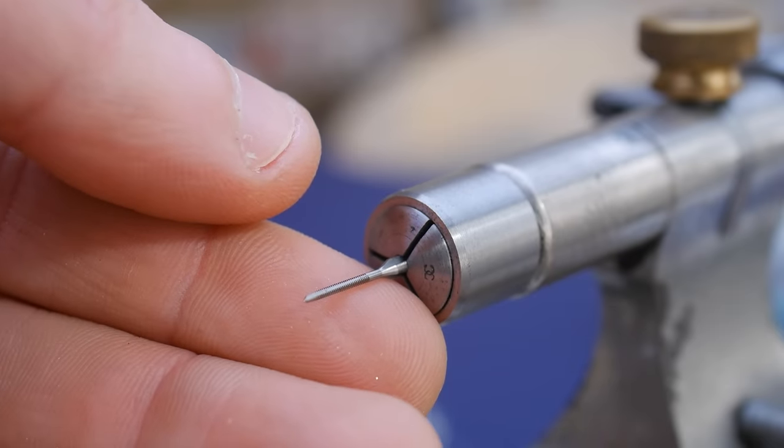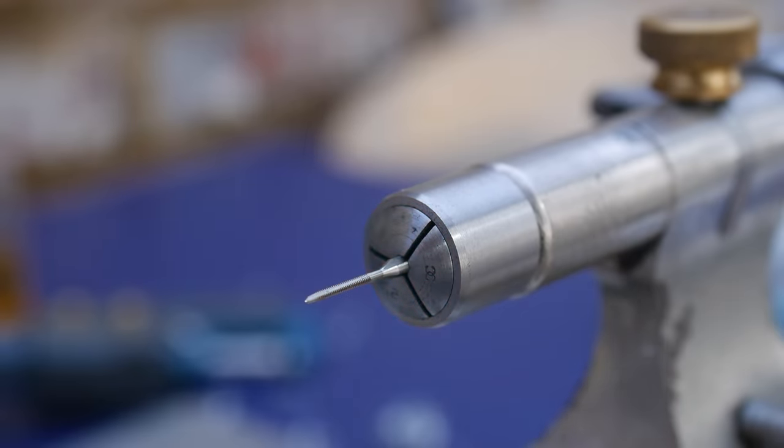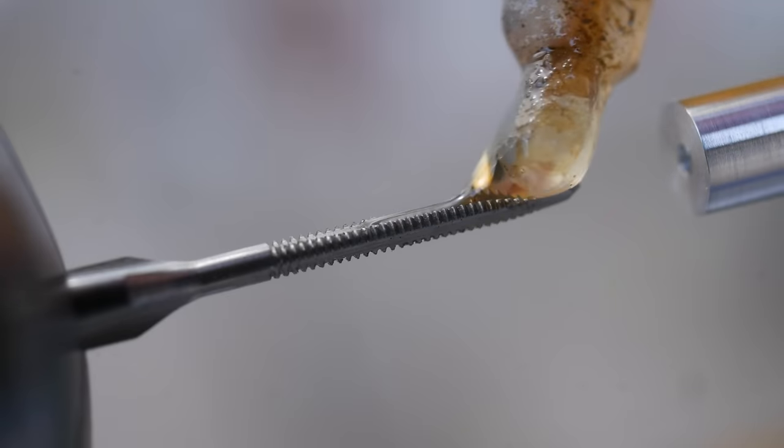I tap an M1 thread in the end of the displacer to accept the 1mm diameter reciprocating rod.